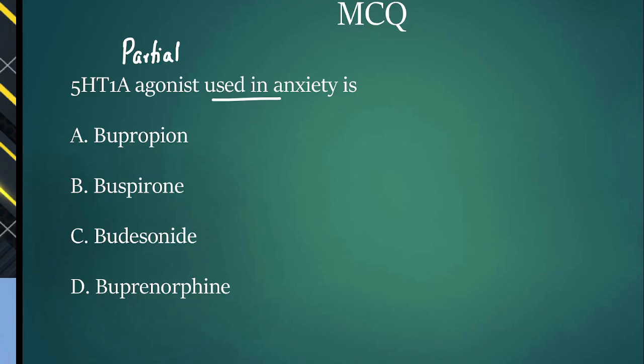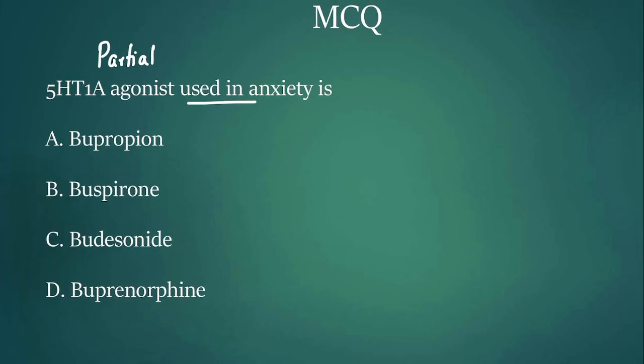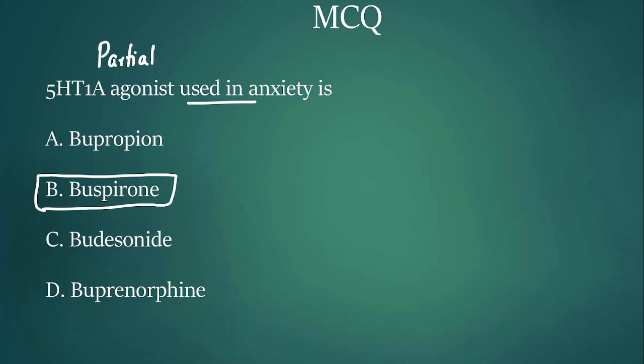Used in anxiety. Try to answer this question. The options are: bupropion, buspirone, budesonide, buprenorphine — all of them sound similar. If you are saying buspirone, yes, your answer is correct. Buspirone is a 5-HT1A partial agonist used to manage anxiety.